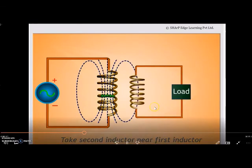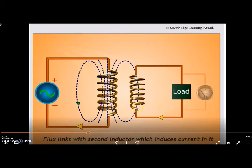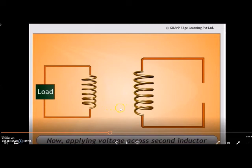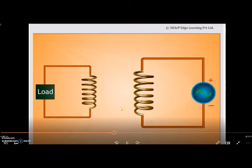When the secondary coil comes in vicinity of the magnetic field from the primary coil, then there will be an EMF induced in the secondary coil. This process of induction of EMF in the secondary coil is called mutual inductance.